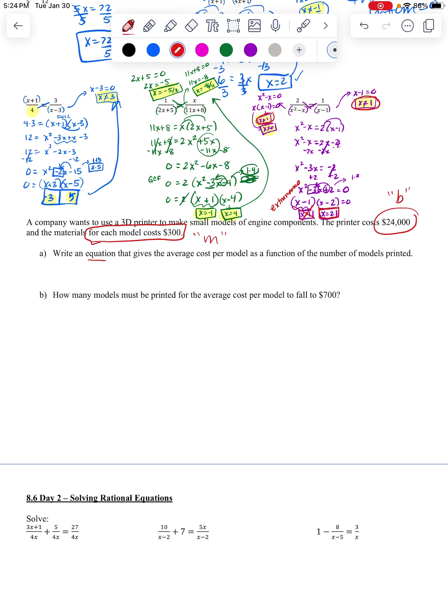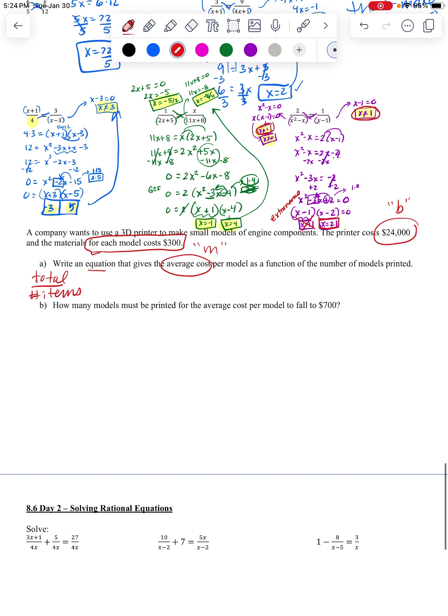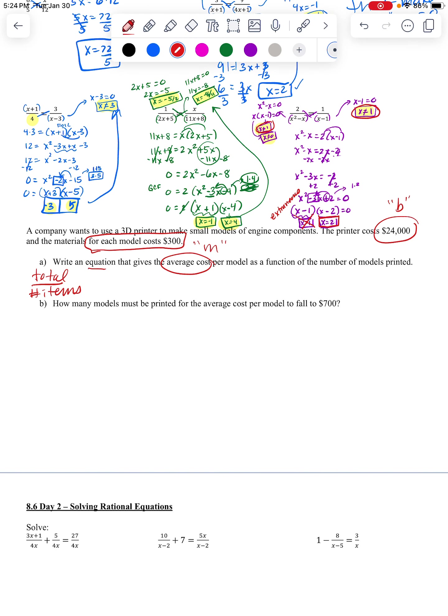So write an equation that gives the average cost. Okay, so when you do the average, you always do the total divided by the number of items. Okay, well, in our case, the total, they want the average cost. So we need to find the total cost divided by, it says, average cost per model.